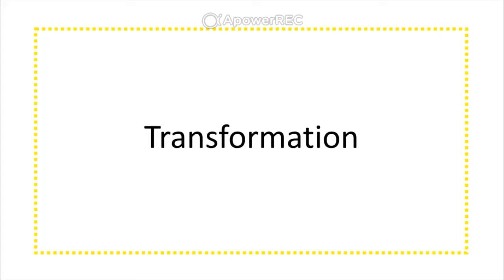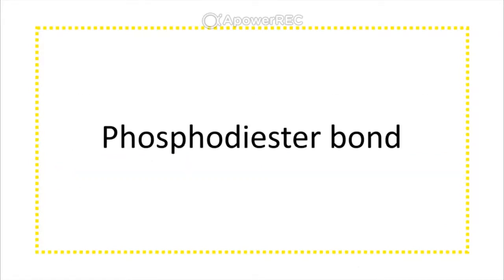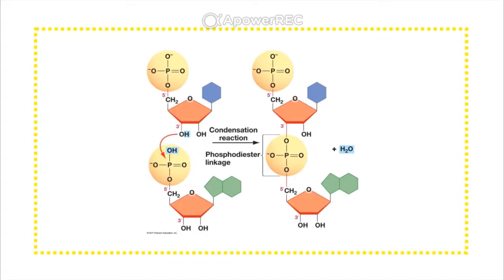Next term: transformation. Transformation is the process of naked DNA being passed between cells. Naked DNA means it's not housed in a cell or in a virus. One way or another it enters the cell, and you can have genetic recombination where that DNA becomes part of the chromosome, altering the features of the bacteria — it then becomes a transformed cell.